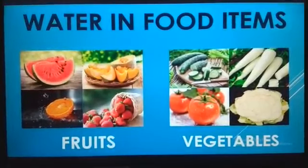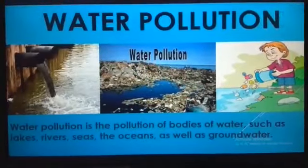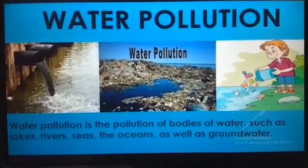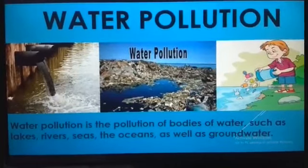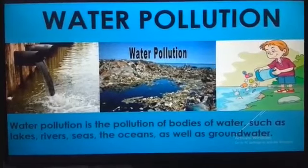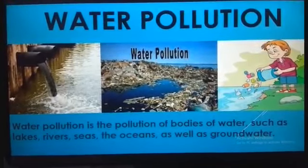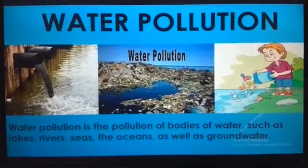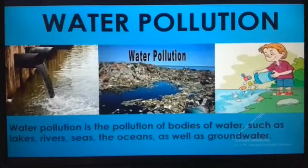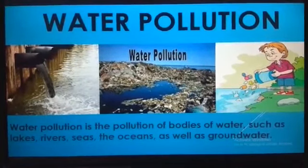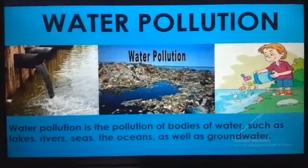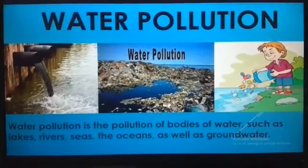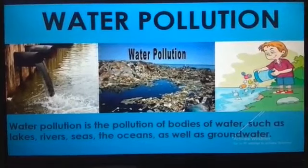Next topic: water pollution. Water in rivers and lakes often becomes dirty — this is called water pollution. Water pollution is a process by which water gets dirty and harmful. The waste materials from homes and factories which are thrown into the rivers and lakes cause the water to get polluted. These waste materials kill the plants and fish that live in the water.